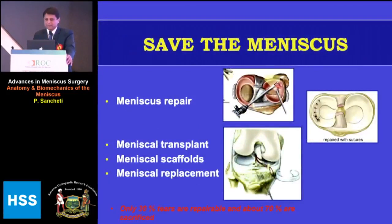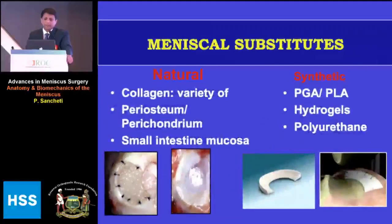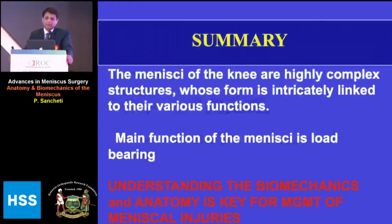The way forward is to save the meniscus. For tears that cannot be saved, we now have meniscal transplants becoming popular, with bone plug techniques also being performed. There are also meniscal substitutes gaining popularity — natural ones such as periosteum or small intestine mucosa, and synthetic substitutes — all being used to preserve the meniscus and help restore better biomechanics.